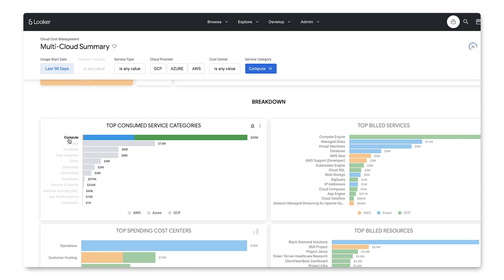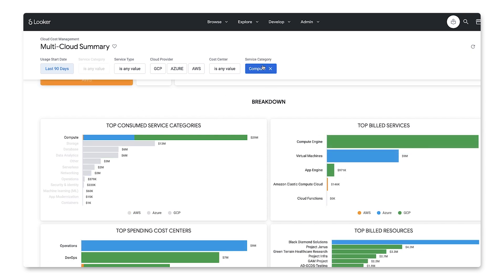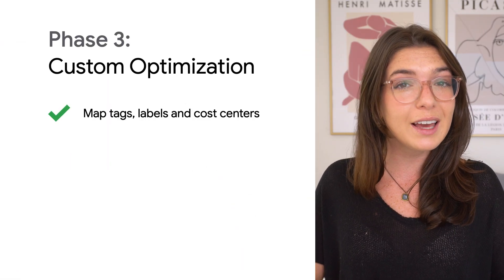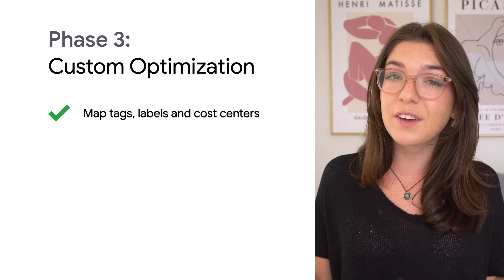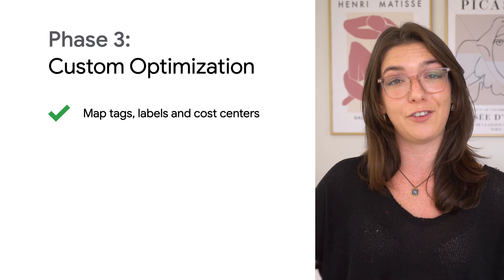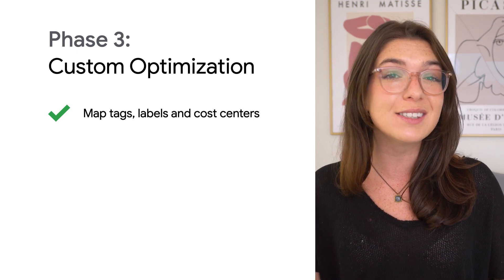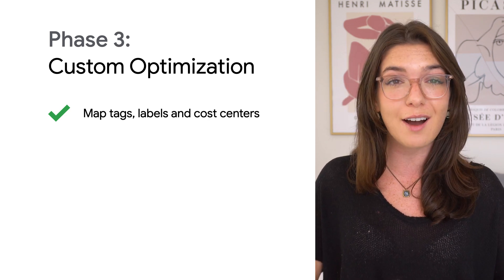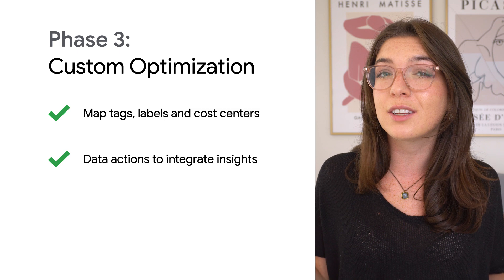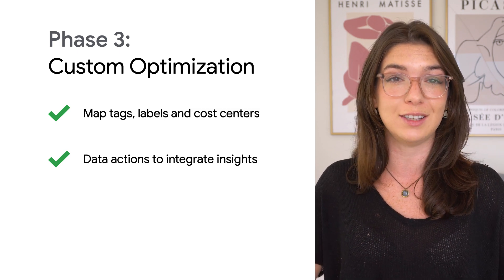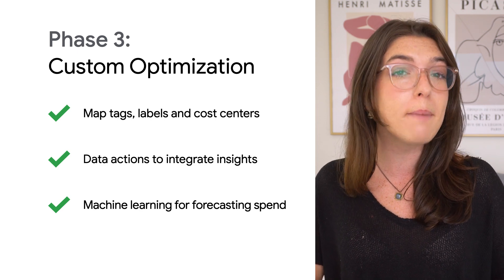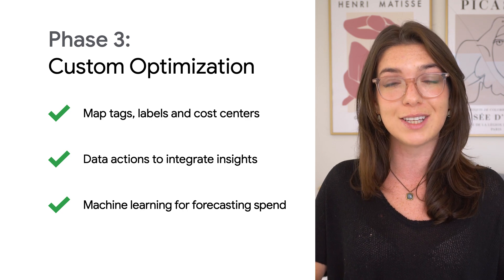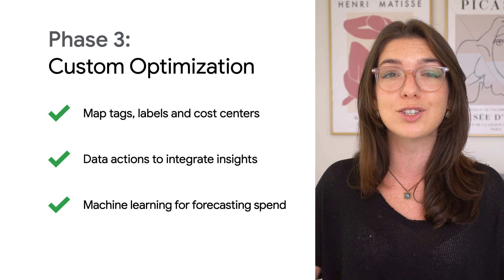For example, we can focus on spend for compute across all three providers. Centralizing your cloud billing data into BigQuery unlocks even more cost-saving opportunities. But in the last phase, we take things one step further by mapping tags, labels, and cost center information across each of the clouds. Additionally, we introduce automatic data actions and BigQuery machine learning forecasting models to empower you to be proactive about spending decisions and take direct action from within the tool.